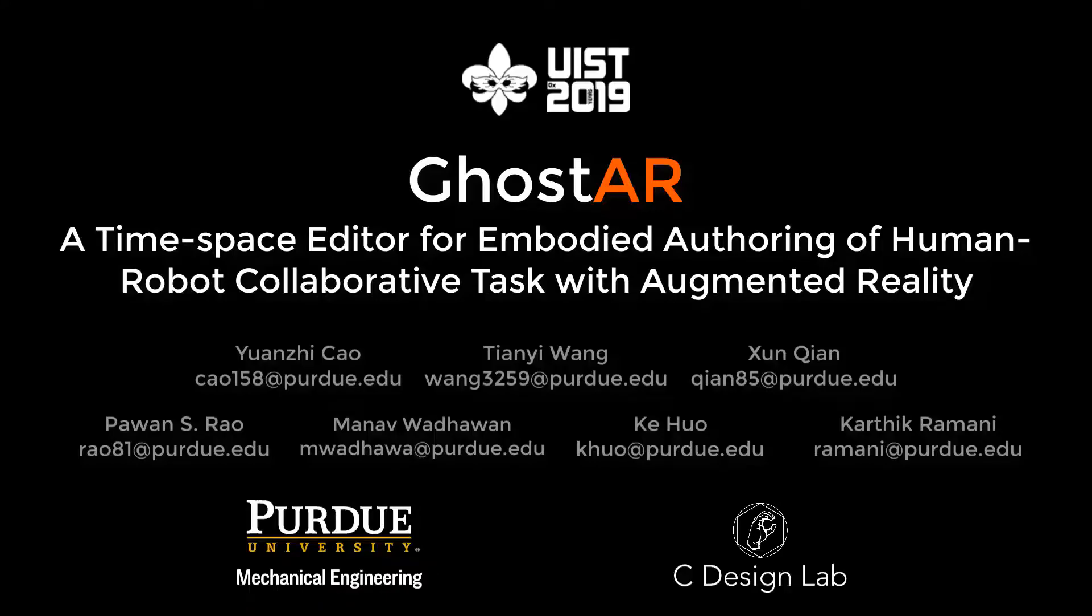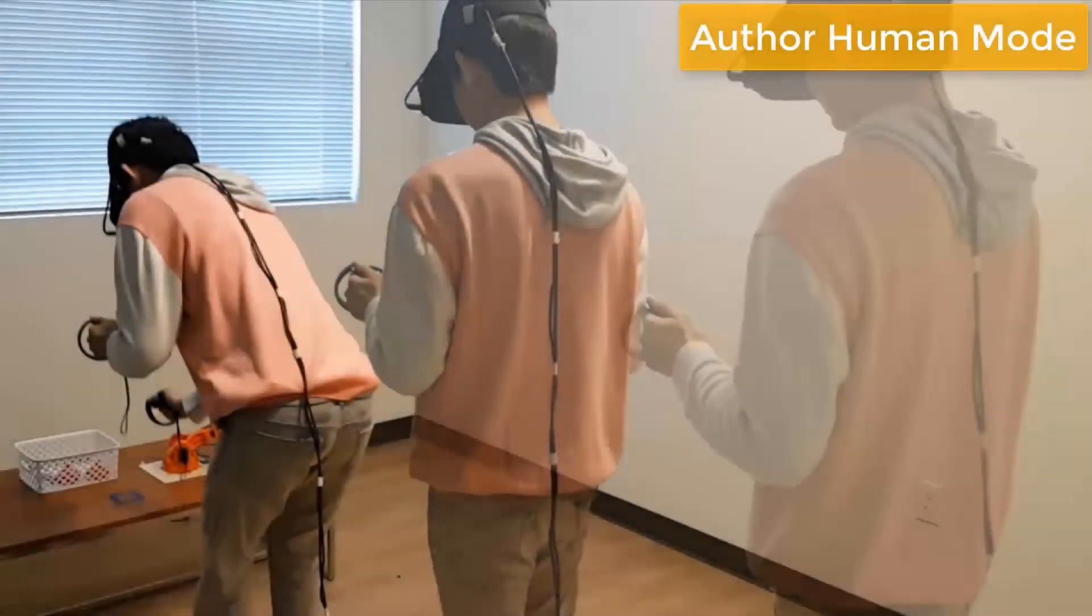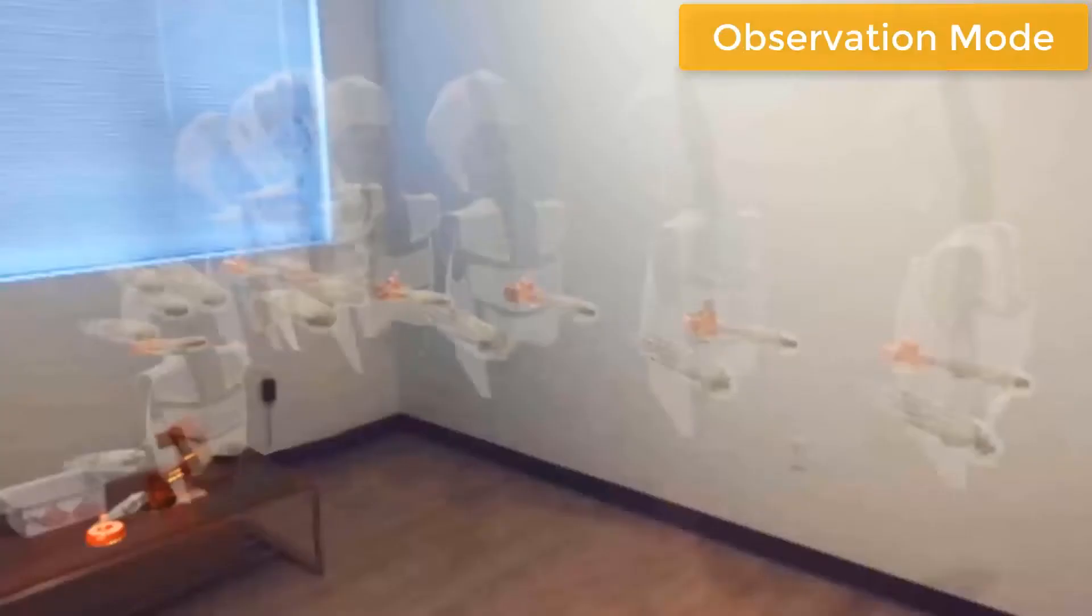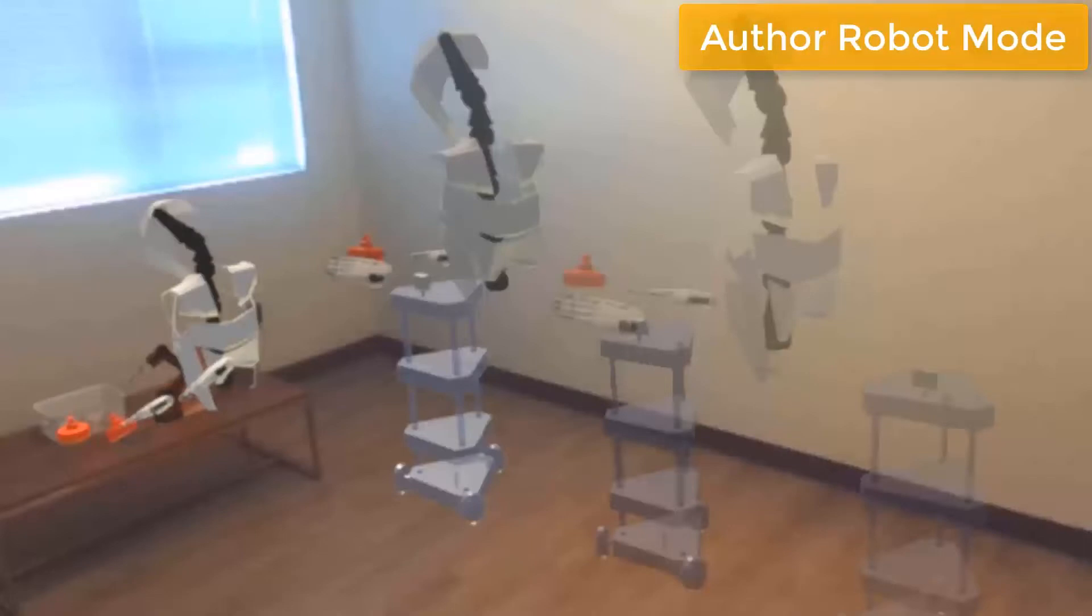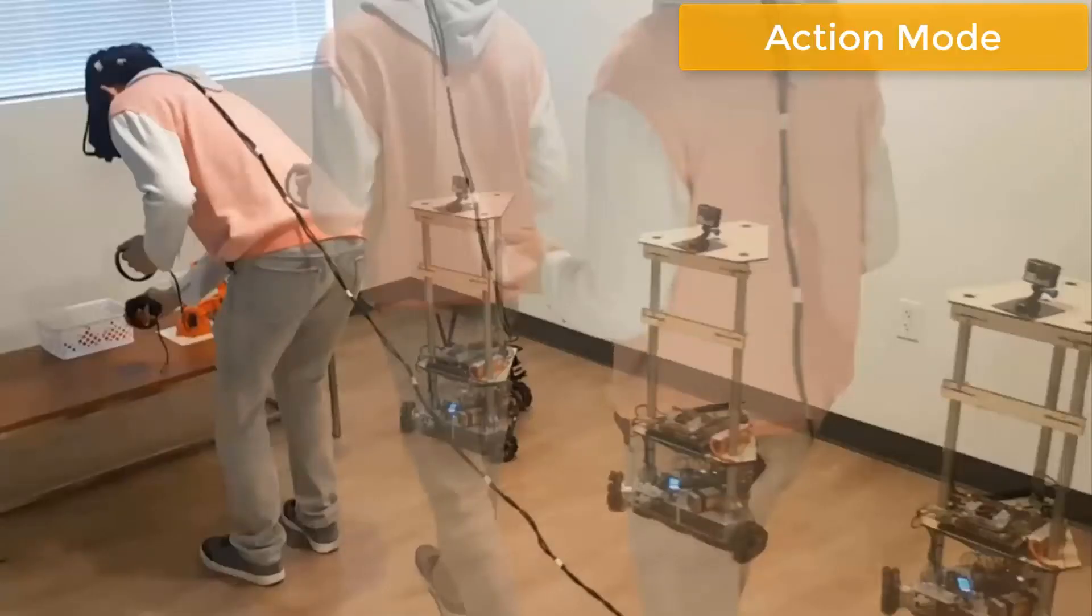We present GhostAR, a time-space editor for human-robot collaboration task authoring. Our system captures user's body motion and represents it with ARGhost. Using that as a spatial and visual reference, user authors collaborative robot tasks with time-space coordination.